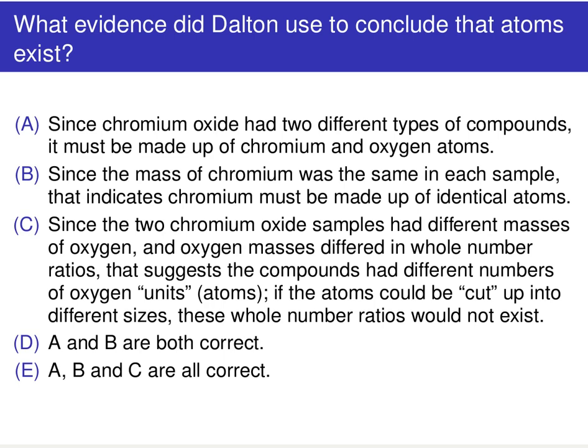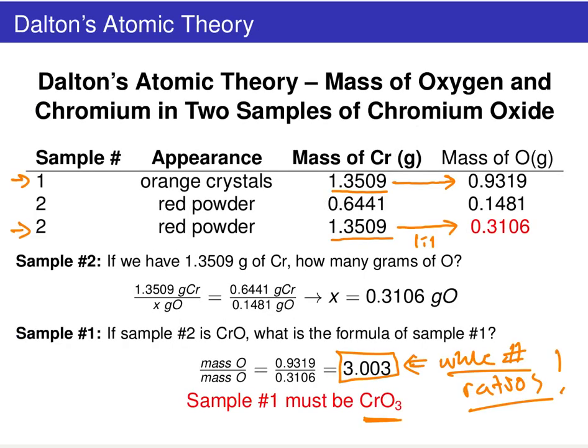Please pause the video for a minute or two and think about which one is correct. Going back and looking at the problem — we're seeing this whole number ratio, and Dalton found these whole number ratios over and over again.